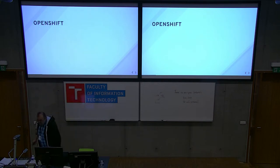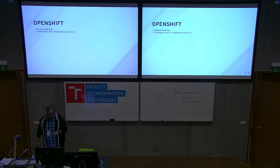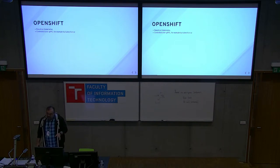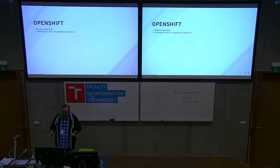The next thing to consider is OpenShift, which is Red Hat's version of Kubernetes. It's controlled also over gRPC. In fact, you can use the same standard kubectl command to talk to it. OpenShift also has historically its own command-line client named OC, but at this point the commands are very, very similar in terms of what they can do.